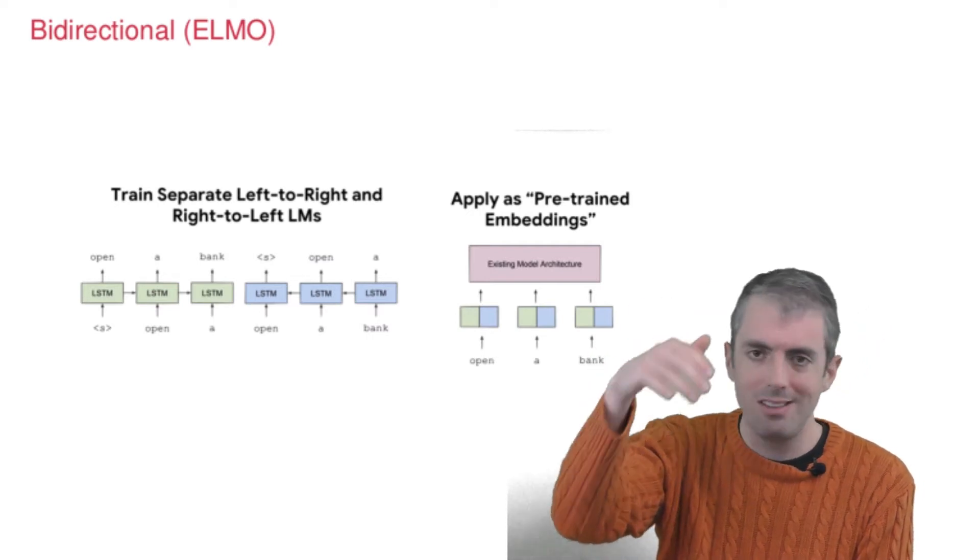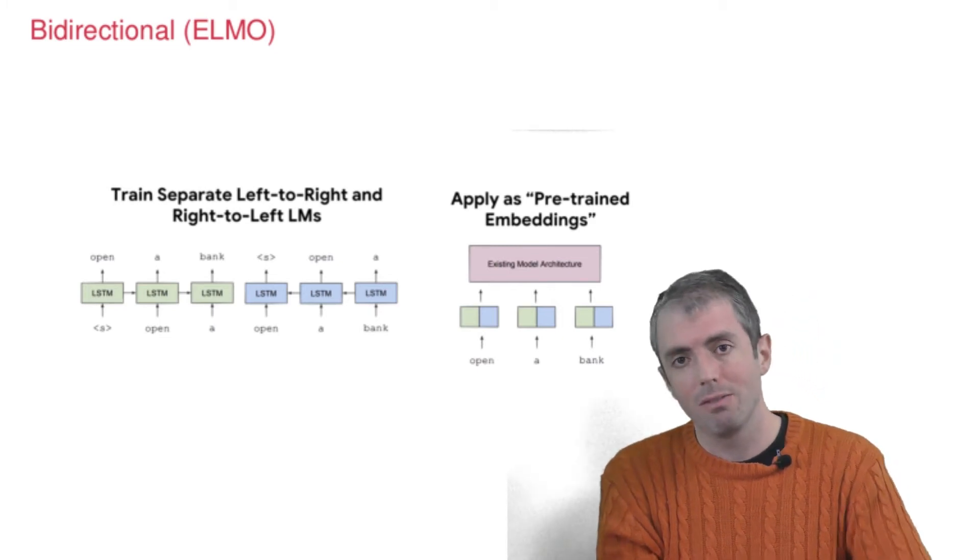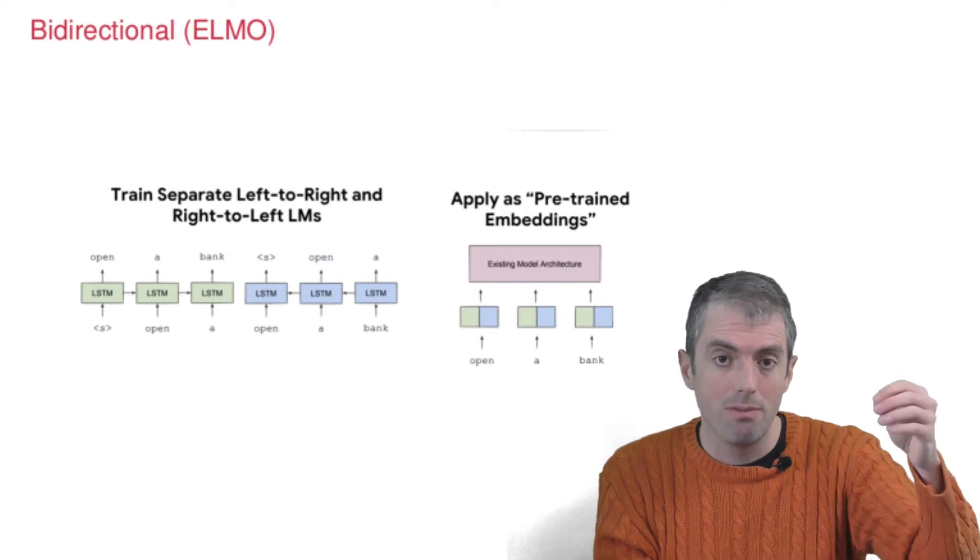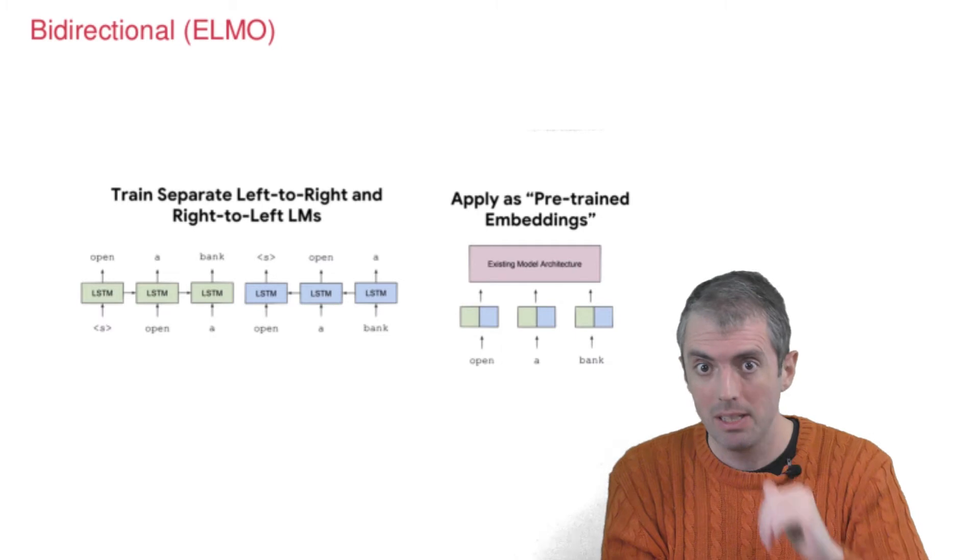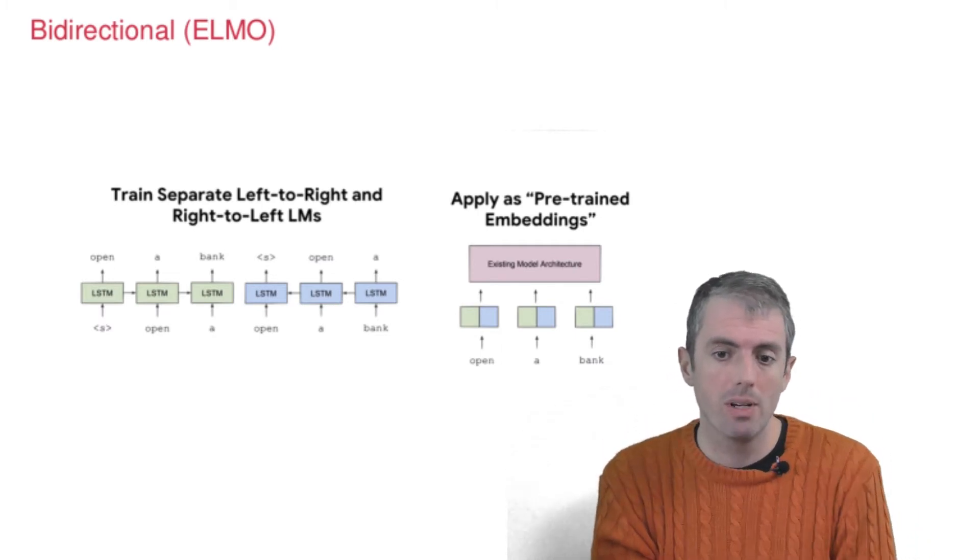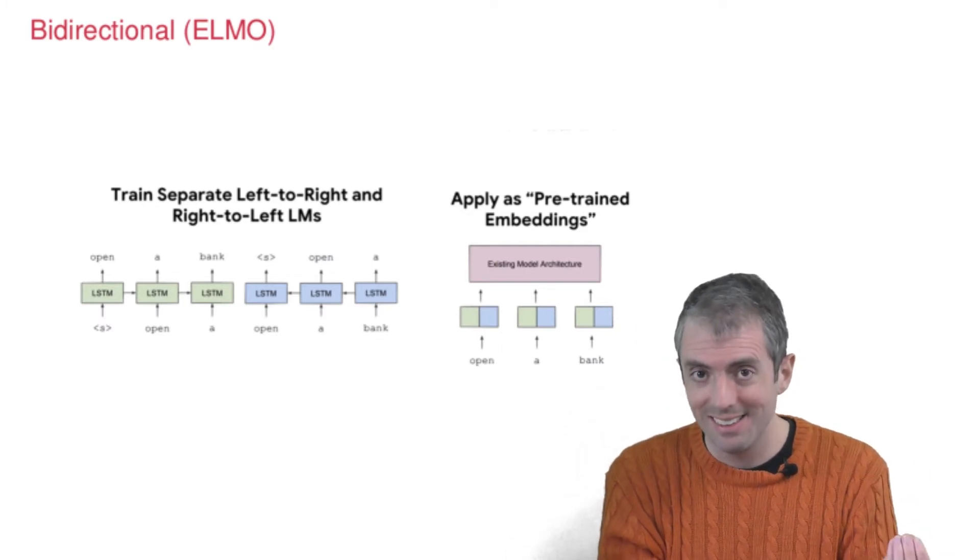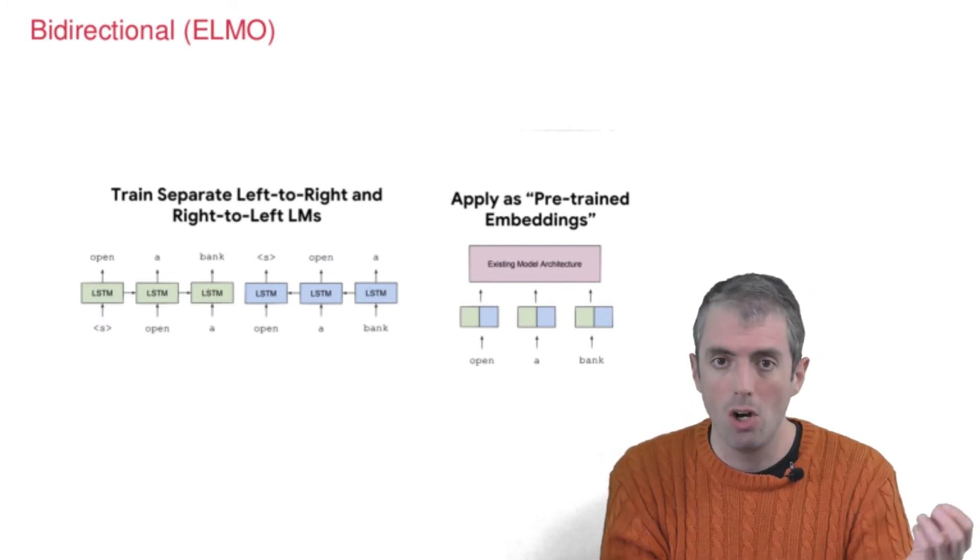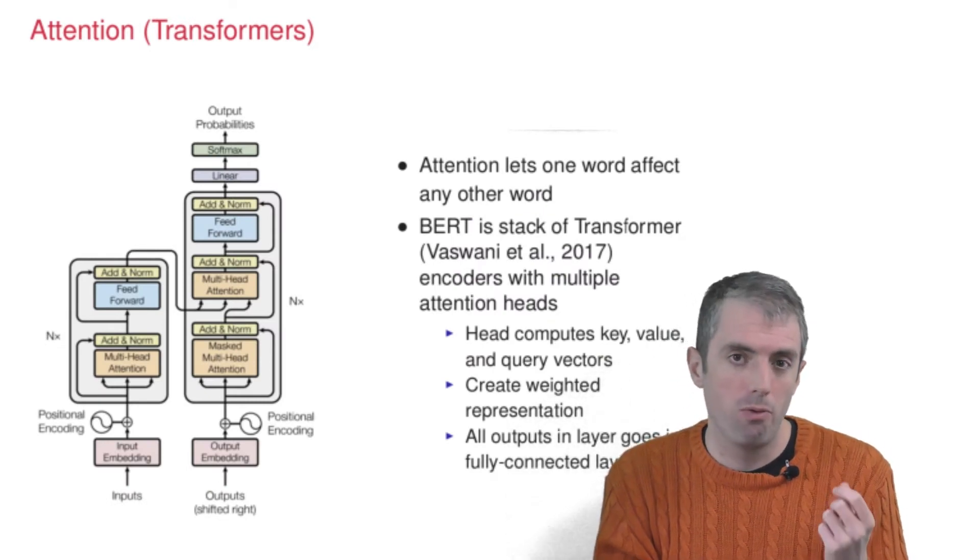You can feed that into your favorite model and use this as a better alternative to the one-size-fits-all word vectors that you get from Word2Vec or GloVe or any of the other models that give you one vector per word, or per word type, to be more specific. Here we're looking at per word token representations. So 'open' in one sentence, 'open a bank' might have a different representation than 'open a box.'